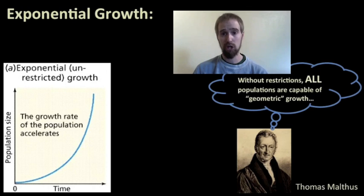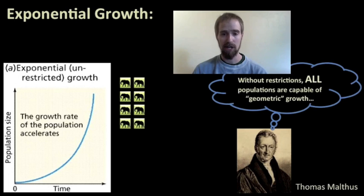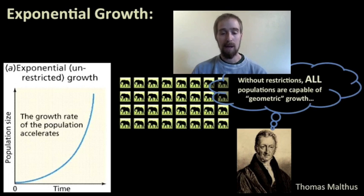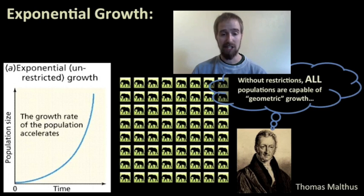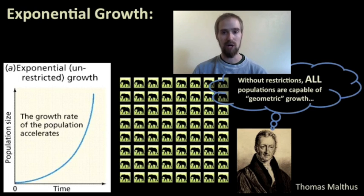It was actually a German economist by the name of Thomas Malthus who first told us this. He said that without restrictions, all populations — including the human population — are capable of what he called geometric growth. Geometric growth is basically the same thing as exponential growth, and if you watch the elephants appear on the screen, you should be able to see why. It doesn't matter whether we're talking about elephants, bacterial cells, humans, birds, or plants — all populations, if left to grow unrestricted, are capable of growing exponentially. A population of elephants is going to grow at a much slower rate than bacteria, but given enough time, it will grow the same way and get very, very large as well.